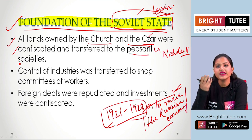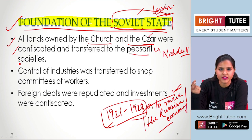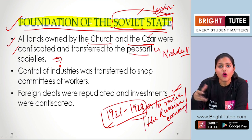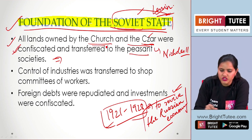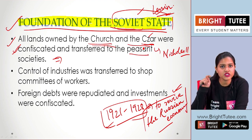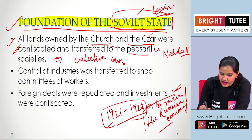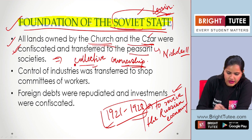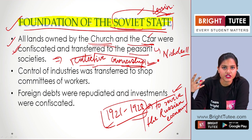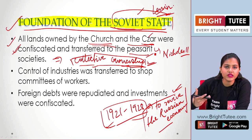Now you remember the whole idea of socialism that we have learnt about. Lenin supported this ideology of socialism — he believed in the concept of communism, a communist government. So basically, all the privately owned lands, whether by individuals, the church, or the Tsar, were taken back by the government and transferred to the peasant societies in order to implement the concept of collective ownership.